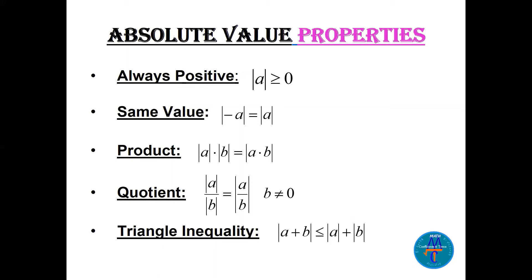Here are five important properties of absolute value: (1) absolute value is always positive; (2) |−a| = |a|; (3) |a × b| = |a| × |b| — you can split products; (4) |a/b| = |a|/|b| — you can split divisions; (5) |a + b| ≤ |a| + |b| — the triangle inequality. Note that equality does not always hold for sums.